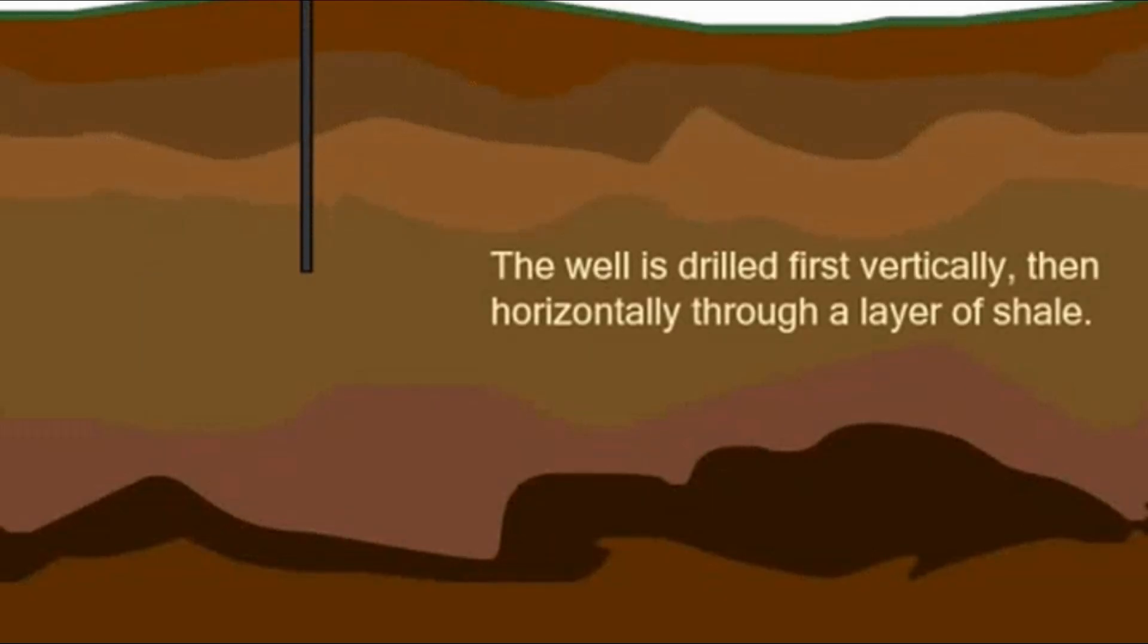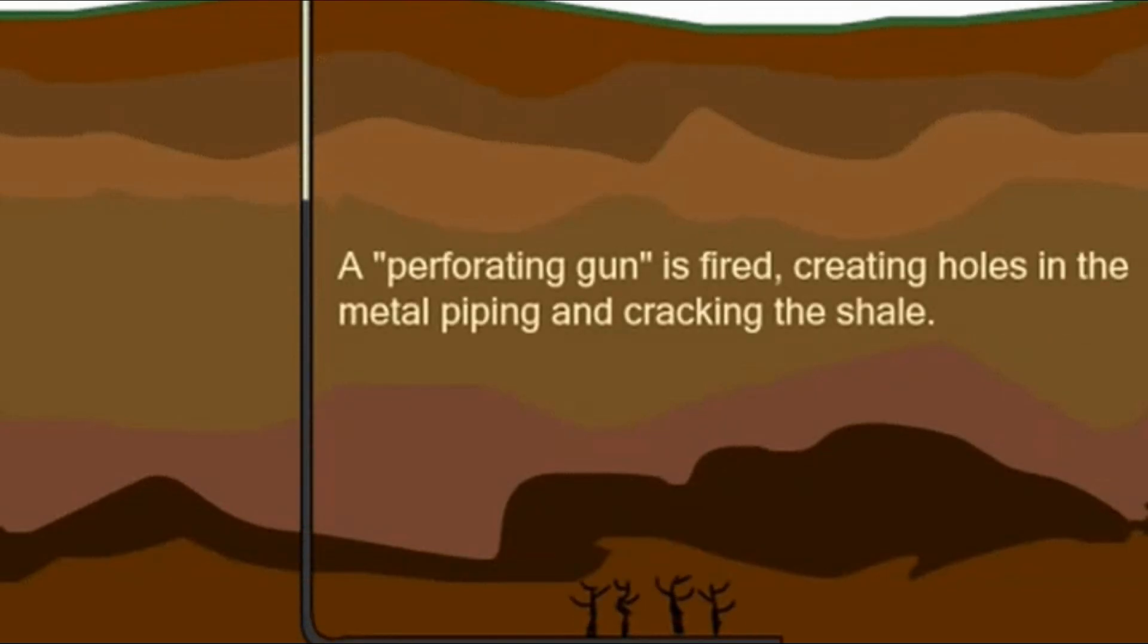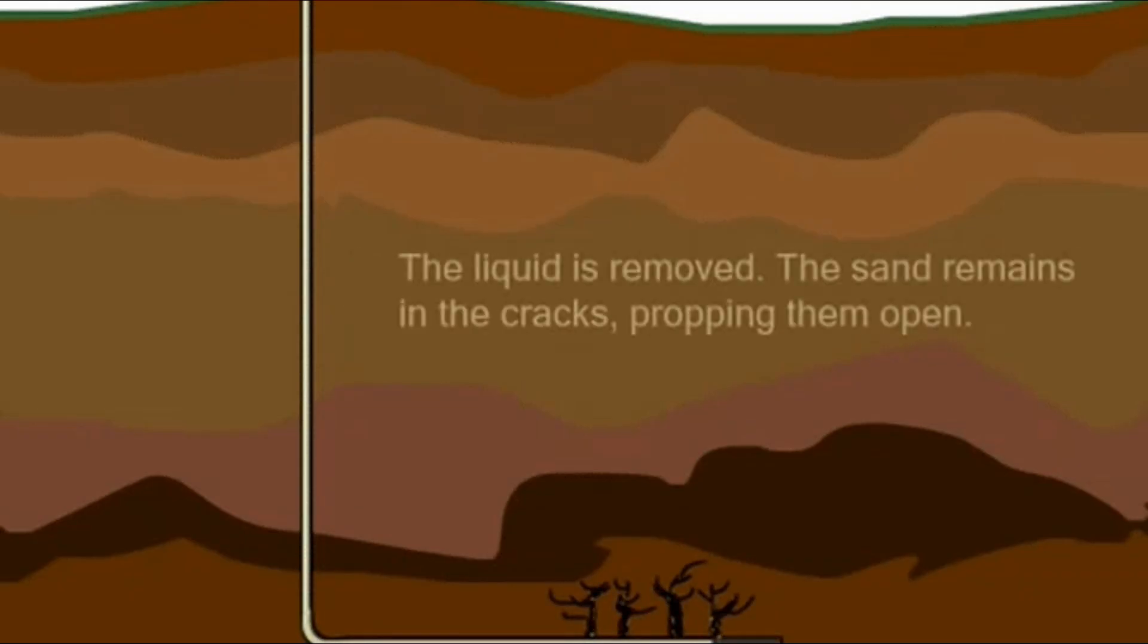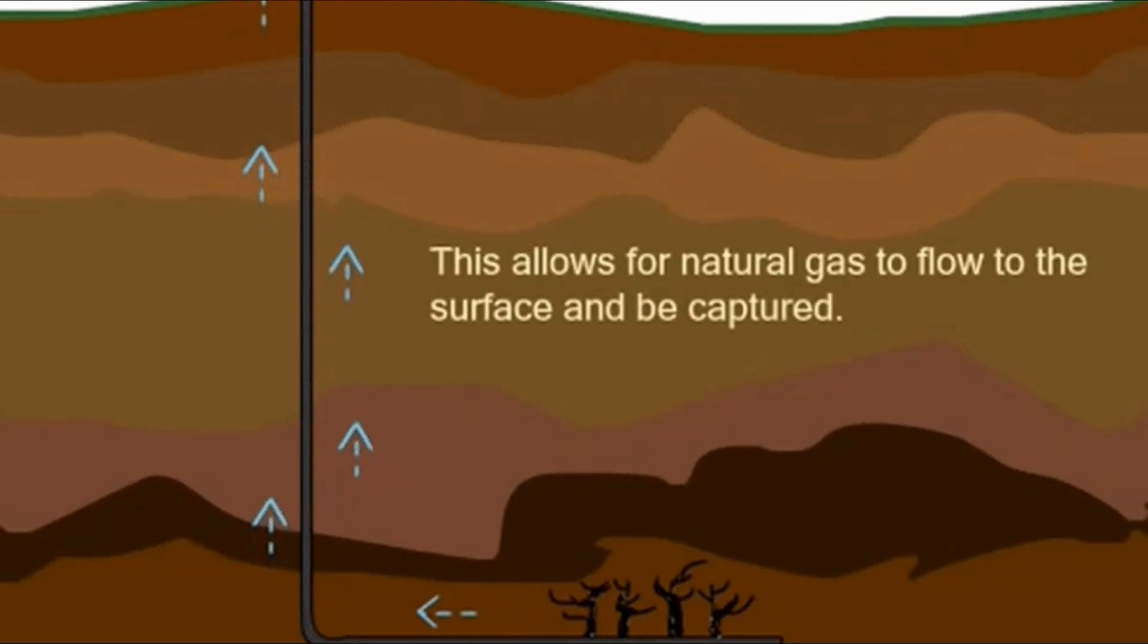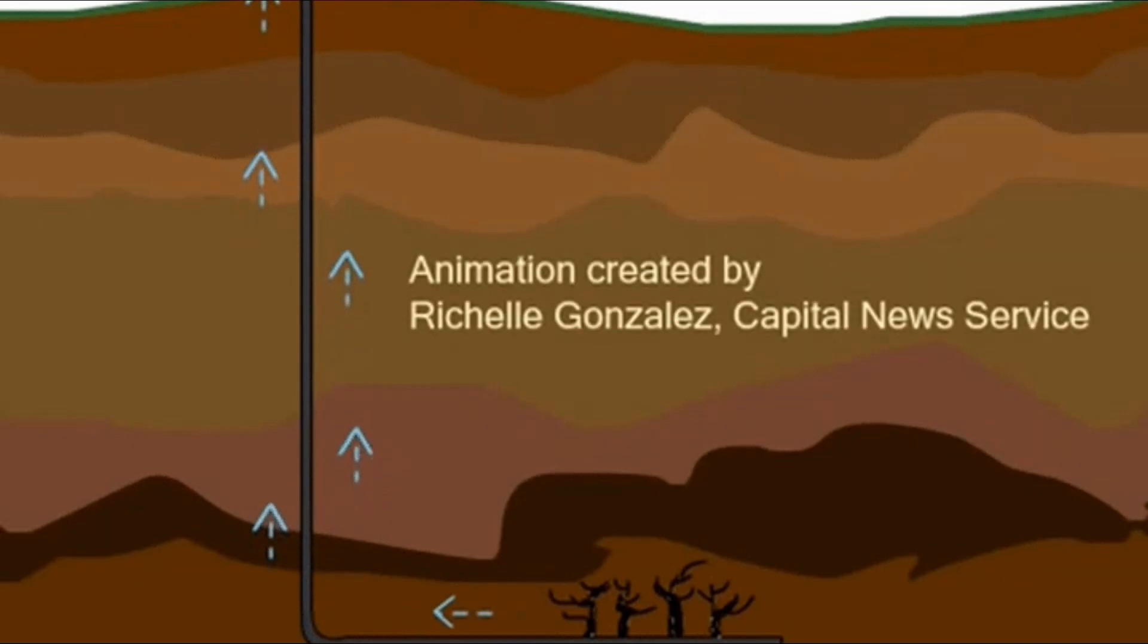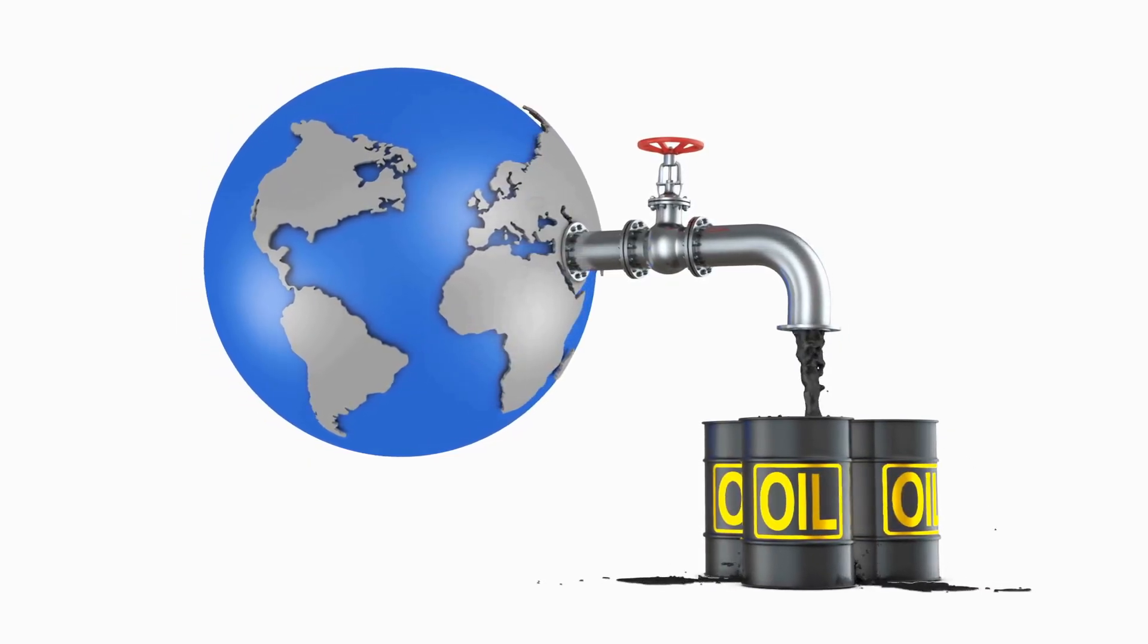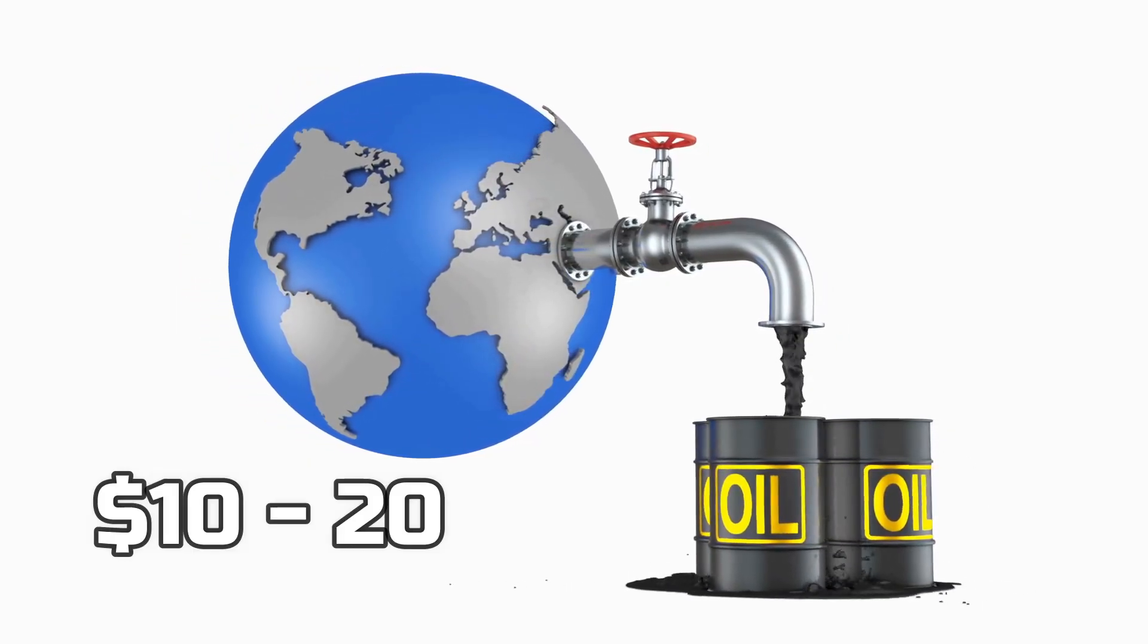To pull oil in between rocks in the crust of earth, first, they insert a type of liquid that's mostly water, and it puts pressure on the rocks and cracks them. After that, oil or natural gas can be pulled out from it.